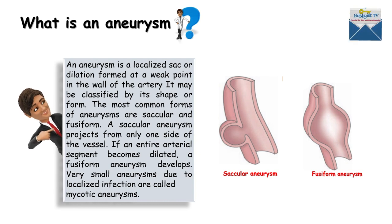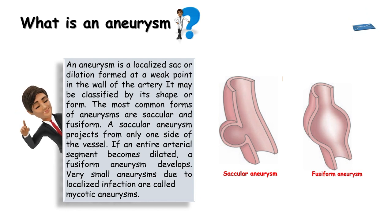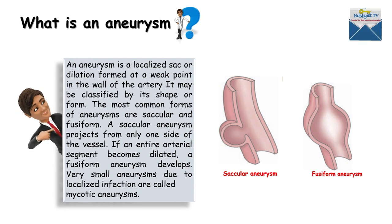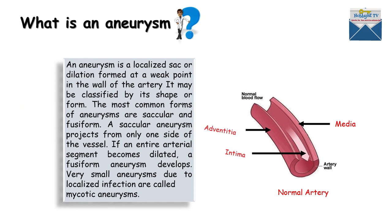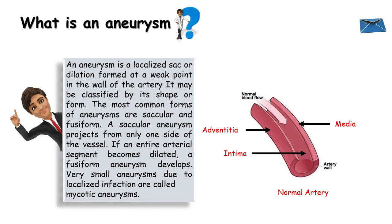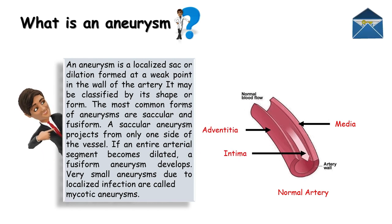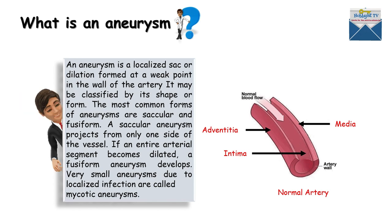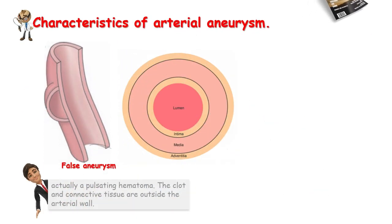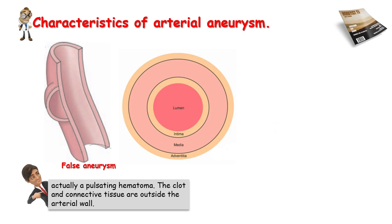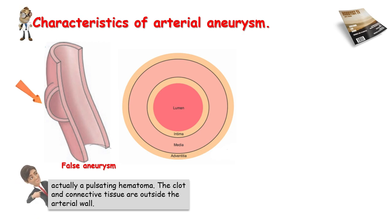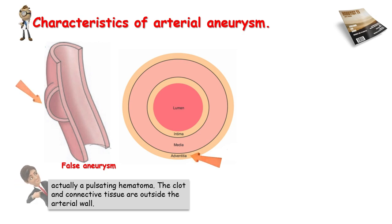Before going to the different characteristics or types of aneurysm, let us first look at the anatomy of an artery and its normal blood flow. This is what the normal artery looks like. Now let us look at the different characteristics of arterial aneurysms. First is the false aneurysm, or the pseudo aneurysm. These are abnormal outpouchings or dilations which are bounded only by the tunica adventitia, the outermost layer of the arterial wall.